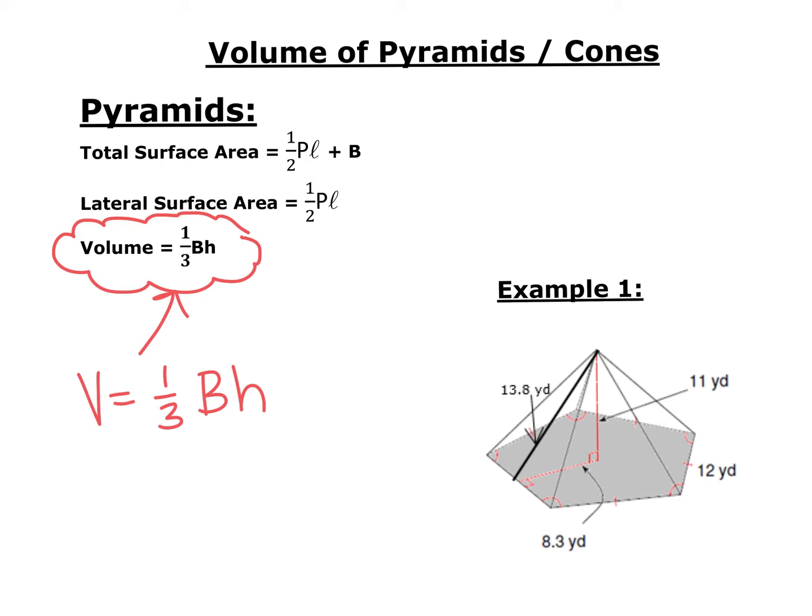It's a regular pentagon, and so my big B is going to be one-half the apothem times the perimeter. In this picture, our apothem is this little segment right here. It's from the center of the regular polygon to the midpoint of one of the sides and it's perpendicular to that side, and that is labeled as 8.3 yards. My perimeter is all the sides, and there's five of them times the length of the side, 12 yards.